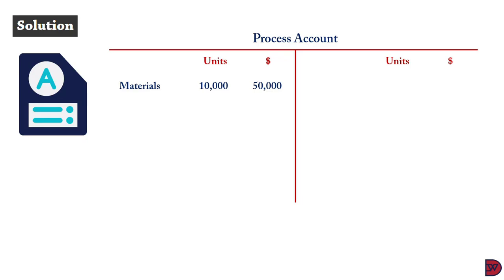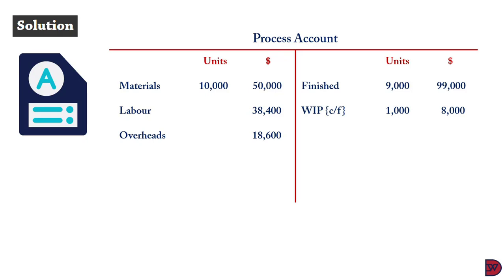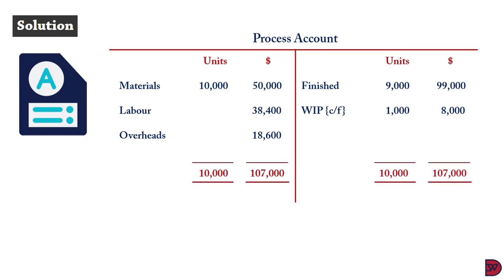For the process account, on the debit side: materials — 10,000 units, $50,000; labor — $38,400; overheads — $18,600. On the credit side: finished goods — 9,000 units at $11 = $99,000; work in progress — 1,000 units at $8,000. The account closes with 10,000 units on both sides and a total cost of $107,000.